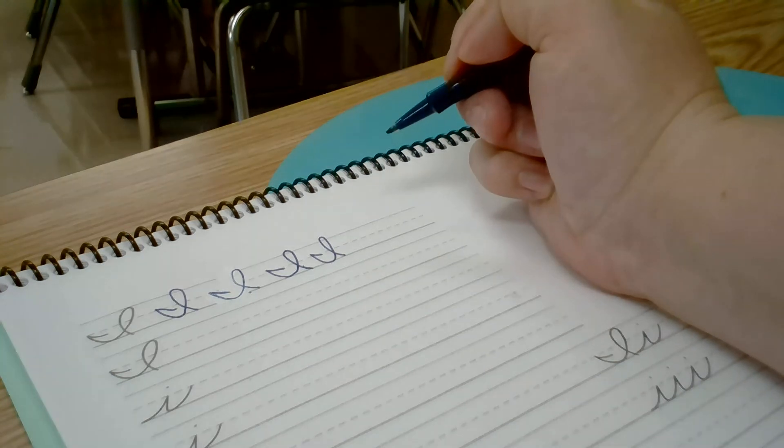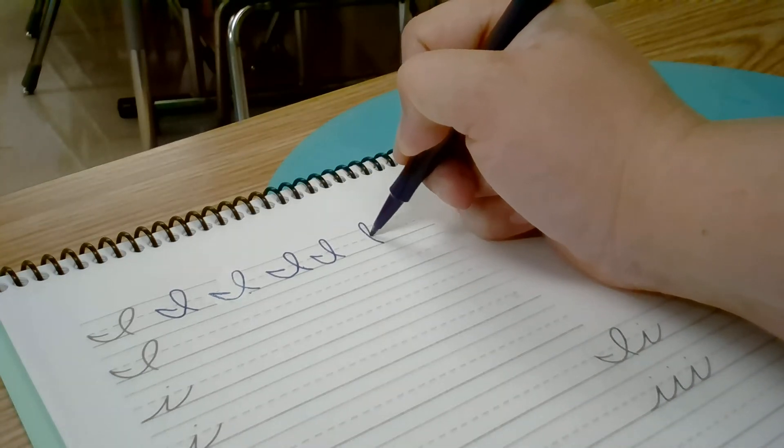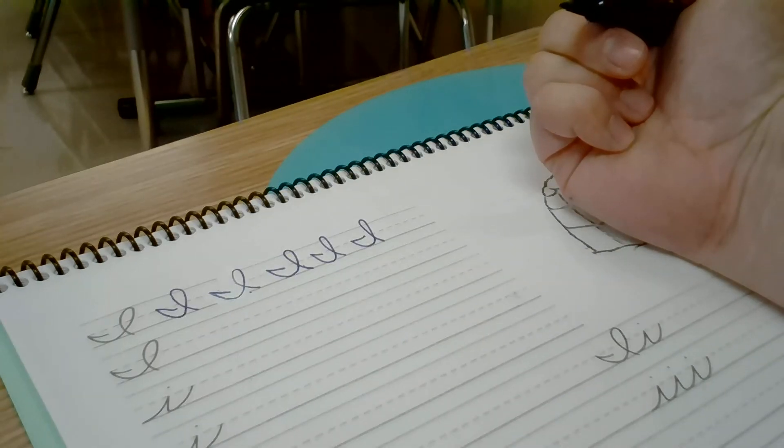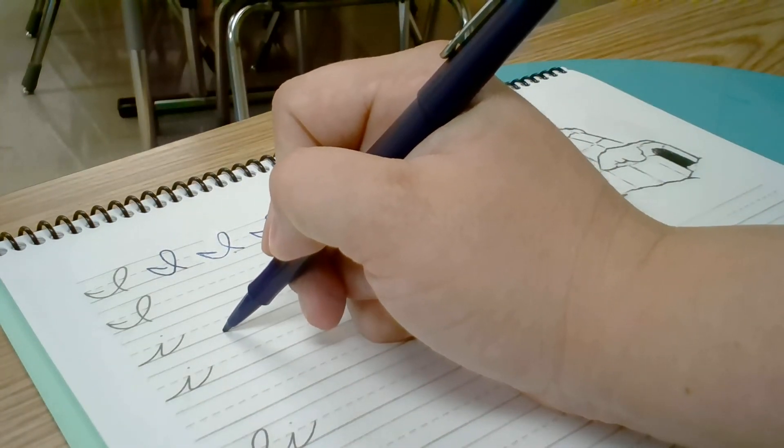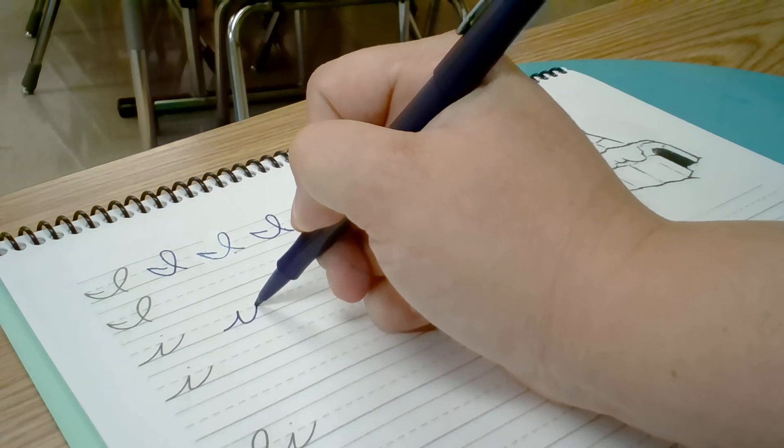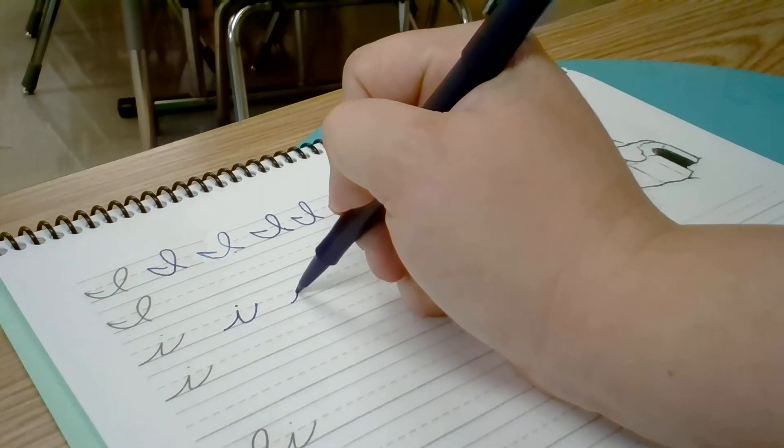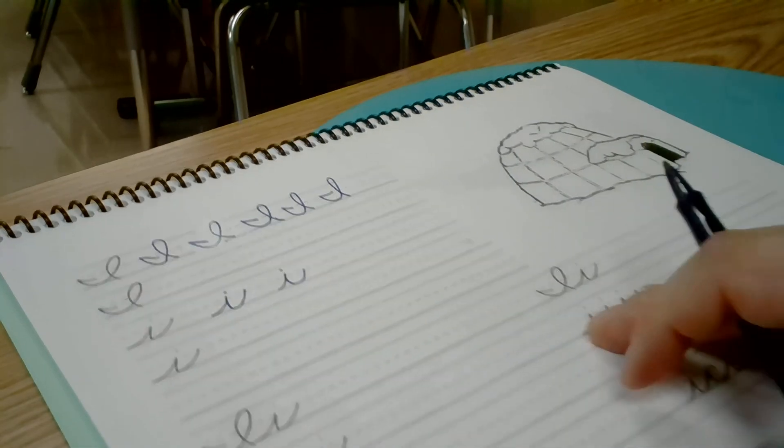When it feels like you're making them backwards, keep practicing. When you're ready to move down to the lowercase i, start here, come up to the midline, down, tail stops here, then you dot your i. You'll notice as you get down to where you're practicing connections, you always make the letters first, then go back and dot the i's.